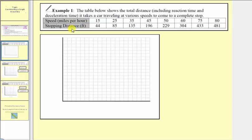Also notice how the lowest value of the speed is 15 and the highest value is 80. And for the stopping distance the lowest value is 44 and the highest value is 481. Let's go ahead and record this information.